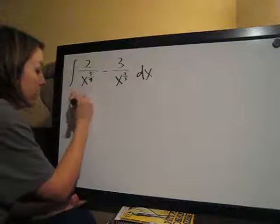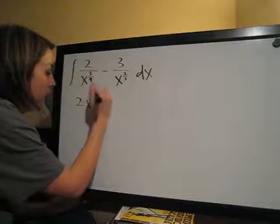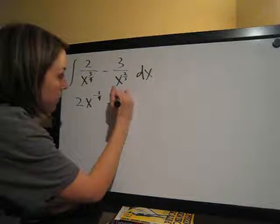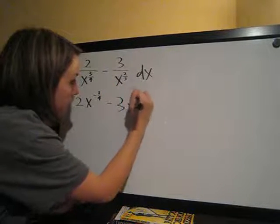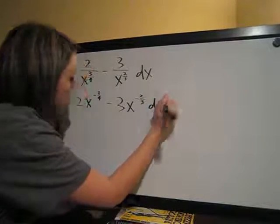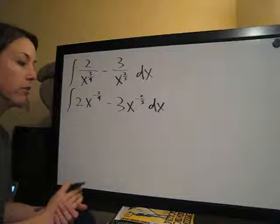So this is going to be 2x to the negative 3 fourths minus 3x to the negative 2 thirds. That is how we convert the integral.